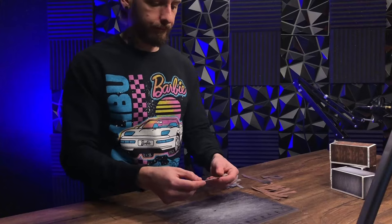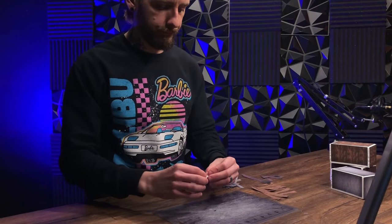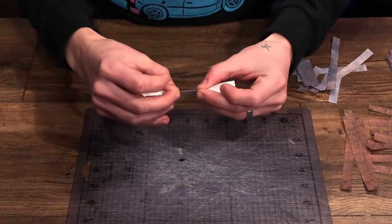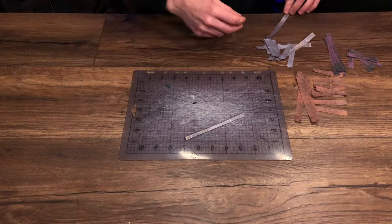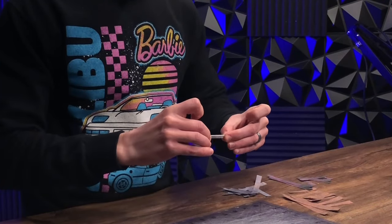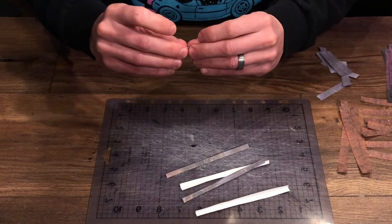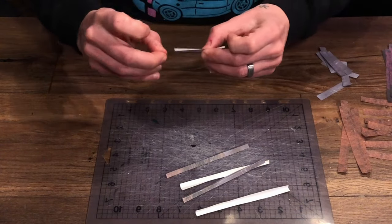Once those are all ready we're going to be moving on to what I think might be the most skill intensive part of this build and that is you're going to fold these in half down the middle long ways. This will give us the angles that we need to apply them to these shipping containers and cover up these white edges.